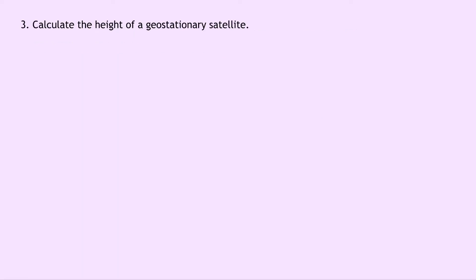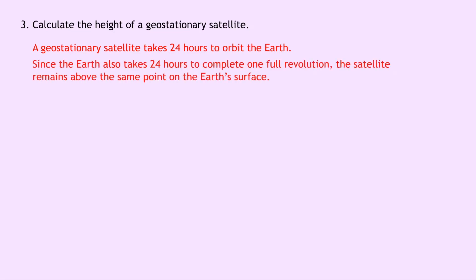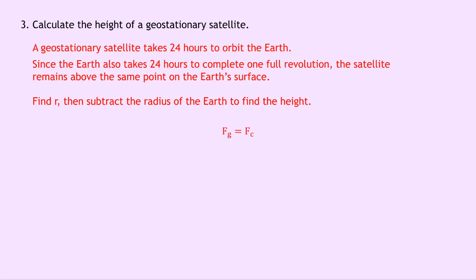Question 3 says to calculate the height of a geostationary satellite. A geostationary satellite takes 24 hours to orbit the Earth. Since the Earth also takes 24 hours to complete one full revolution, the satellite remains above the same point on the Earth's surface. We want to find r and then subtract the radius of the Earth to find the height. Since we're dealing with a satellite of the Earth, we can say the gravitational force provides centripetal force Fc equals mr omega squared, and cancelling the m's gives GM over r squared equals r omega squared.